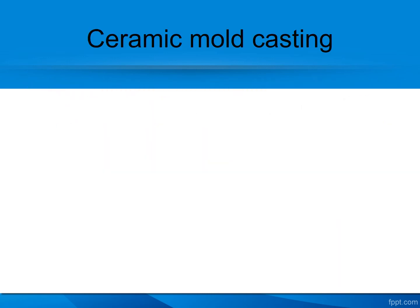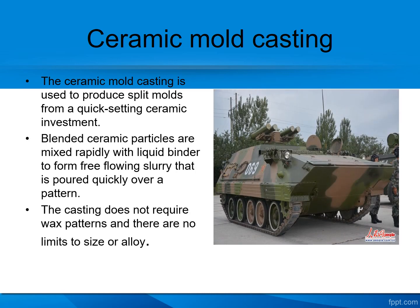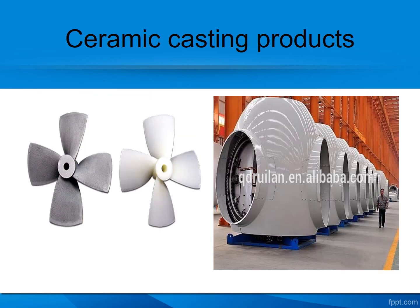Next is ceramic mold casting. It is used to manufacture large components such as military appliances, windmill spares, or any intricate shapes. It uses a quick-setting ceramic investment — blended ceramic particles mixed rapidly with a liquid binder, allowed to flow freely as a slurry. Any size or shape of pattern can be made. For example, the windmill hub — any intricate or large shape can be produced with ceramic casting.